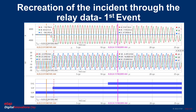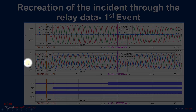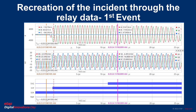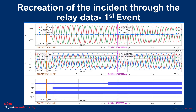ANSI/IEEE nomenclature: number 50 is instantaneous, 51 is time over current, 52 is breaker. 51G and 51P are pick-up settings. 52A blue means breaker is on, and trip not blue means trip is not initiated. So let's roll through this first event.